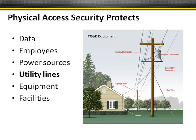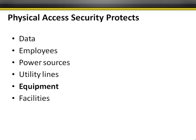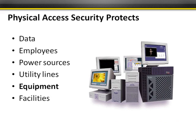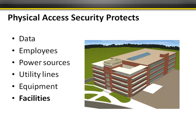Physical access security protects utility lines as well — you wouldn't want anyone accessing physical utility lines, whether service wires, distribution points, or transformers, as things can go very wrong if accessed improperly. For equipment in general, whether a laptop with a device lock or a desktop with a case lock preventing removal of memory or hard drives, there are physical security controls to protect against unauthorized access.